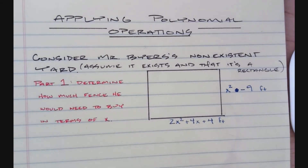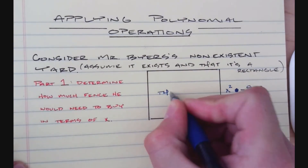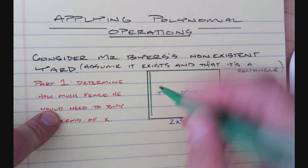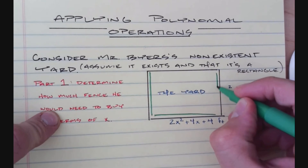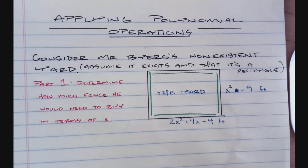Let's go ahead and consider Mr. Byers's non-existent yard — we have to assume it exists. We also have to assume that it's a rectangle. Now, determine how much fence I would need to buy in terms of x. I've given you a rectangle here — this is the yard. In order to figure out how much fence I need, I need to look at what's going on around the edges.